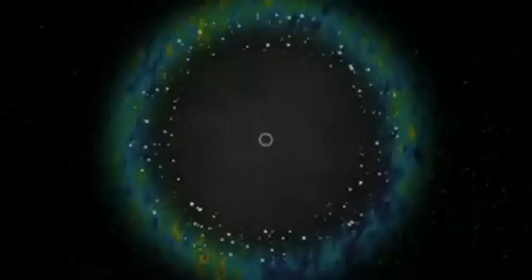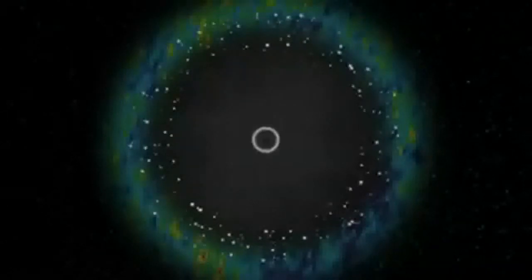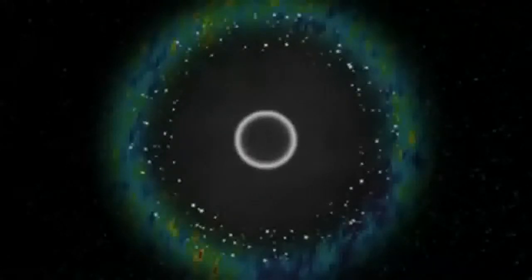Due to the faster than light expansion of space in those early years, the light was actually moving away from us for billions of years before the slowing expansion allowed it to start moving towards us.